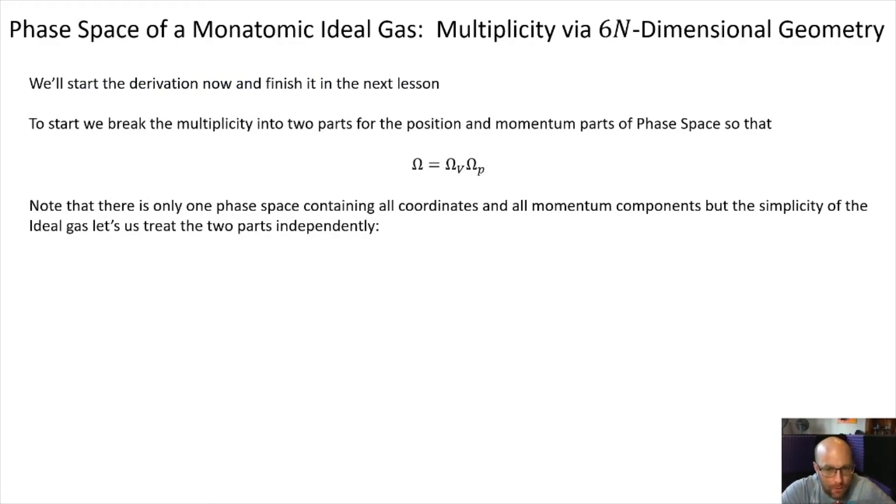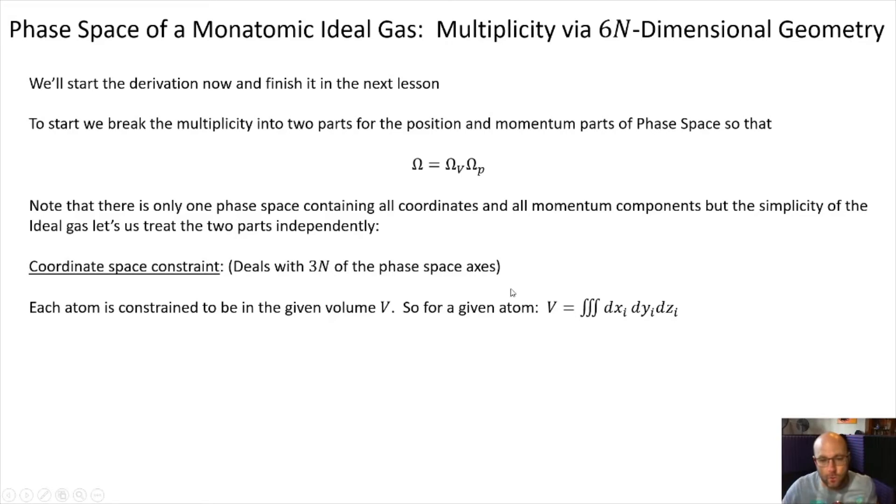So we're going to start a little bit about the derivation today. And we're going to really finish the really difficult parts of the derivation in the next mini lesson. So I'm going to remind you how we're going to start it up. We break the multiplicity for an ideal gas into the multiplicity associated with the real space coordinates. We'll label that by V because it's going to be related to the volume constraint. And then the multiplicity associated with the momentum ω_P. And so it's important to remember there's only one phase space. Phase space contains all the x, y, z's and all the px, py, pz's. But when we're working with an ideal gas, those two parts of the space are completely independent from one another. So we can treat them separately.